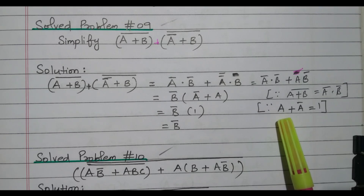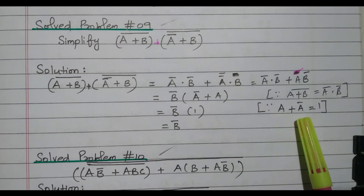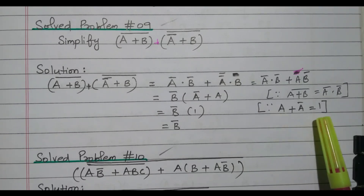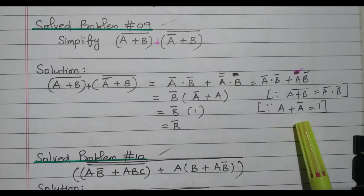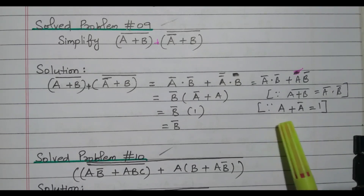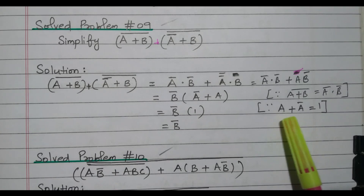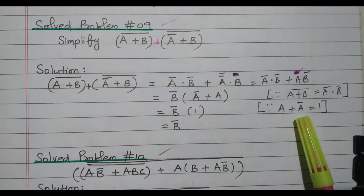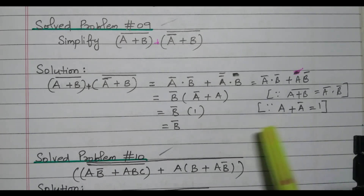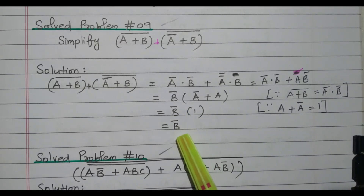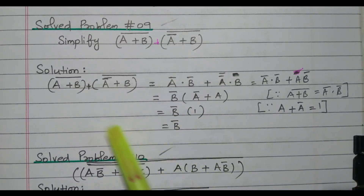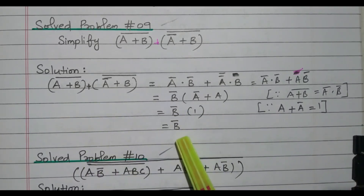A number added to its complement gives 1. For example, if A equals 1 then A-bar is 0, so 1 plus 0 is 1. If A is 0 then A-bar is 1, so 0 plus 1 is again 1. So A-bar plus A equals 1, giving B-bar times 1, which equals B-bar. This expression simplifies to B-bar.